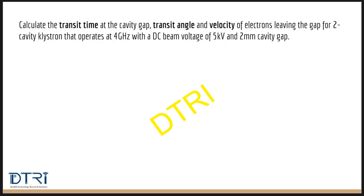Calculate the transit time at the cavity gap, transit angle, and velocity of electrons leaving the gap for a two-cavity klystron that operates at 4 gigahertz with a DC beam voltage of 5 kilovolts and 2 mm cavity gap.